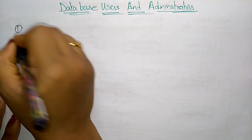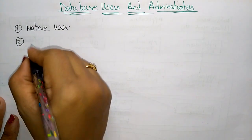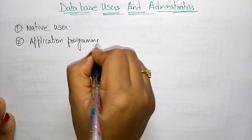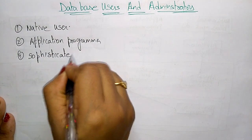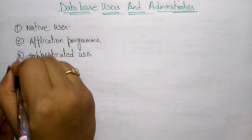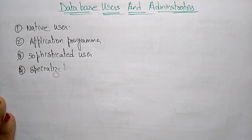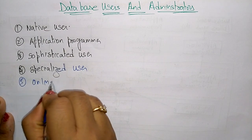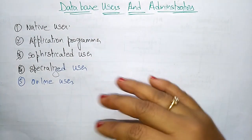The database users are: native user, application programmer, sophisticated user, specialized user, and online user. These are the five users — database users — meaning these people are accessing the database.